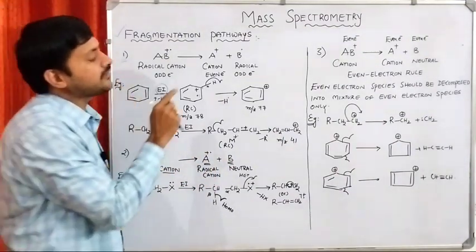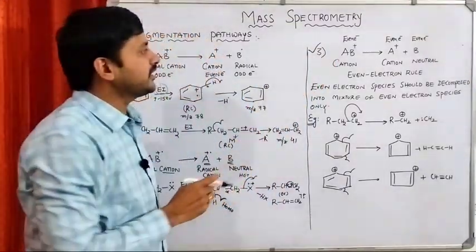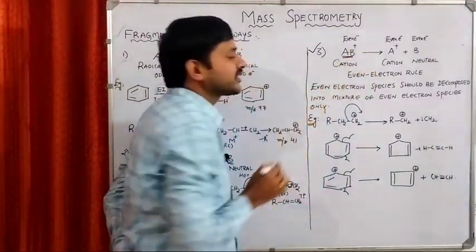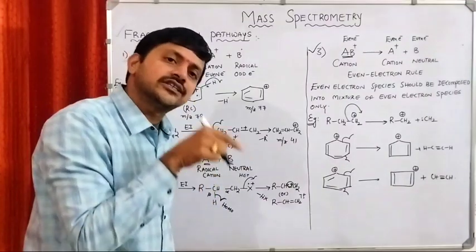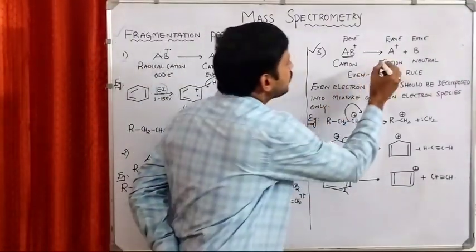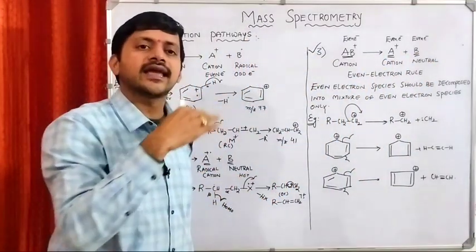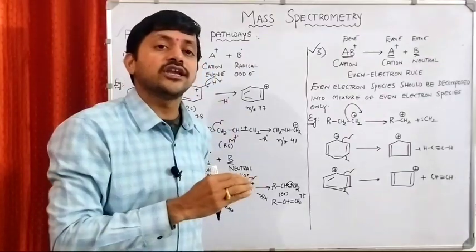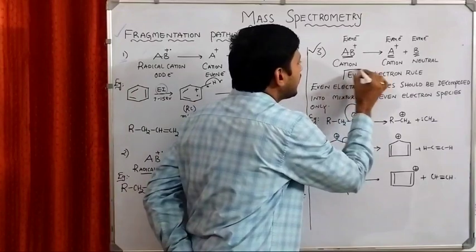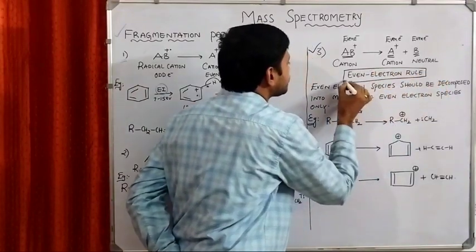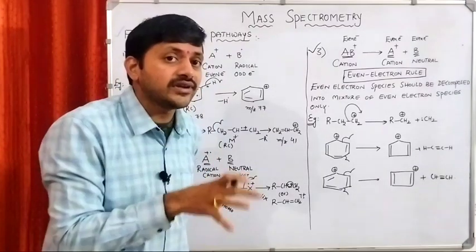Now see the third pathway — a very, very important one. In the third case, if you have a cation, the cation is subjected to fragmentation in such a way that we get another cation and a neutral molecule. This is commonly called the even electron rule — a very, very important rule. The third pathway is commonly called the even electron rule.